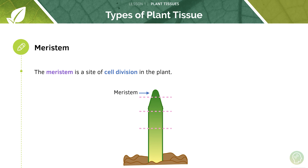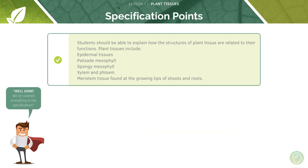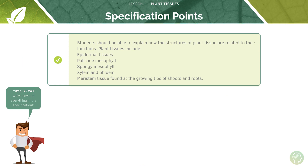Finally, the meristem is a site of cell division in the plant, found at the tip of the growing plant and shoots. At the tip you have the zone of cell division, below that the zone of cell elongation, and further down the zone of cell differentiation. If given a diagram like this, you'd be expected to know that the tip is the meristem and that is your zone of cell division. We've now covered all of these plant tissue structures and their functions.